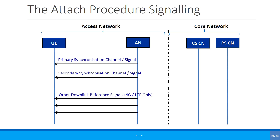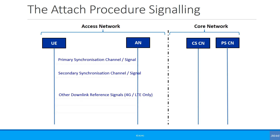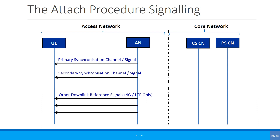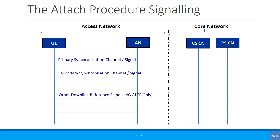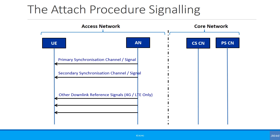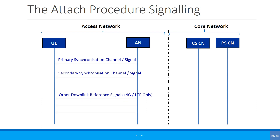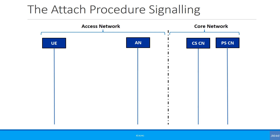When the UE is switched on, it starts listening for synchronization channels. In 2G you have the synchronization channel; in 3G you have the primary and secondary synchronization channel; in 4G you have the primary synchronization signal and the secondary synchronization signal, plus some additional reference signals. The device starts listening to these synchronization signals, and this way it can identify the cell timing and the frame timing. Once it has identified the cell and frame timing, it can read the system information from that particular network.